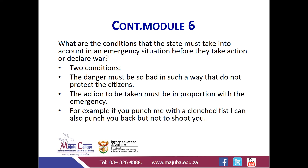What are the conditions that the state must take into account in an emergency situation before they take action or declare war? There are two conditions. First, the danger must be so serious that it threatens to harm citizens. Second, the action taken must be in proportion with the emergency. For example, if you punch me with a clenched fist, I can punch you back with a clenched fist, but not shoot you.